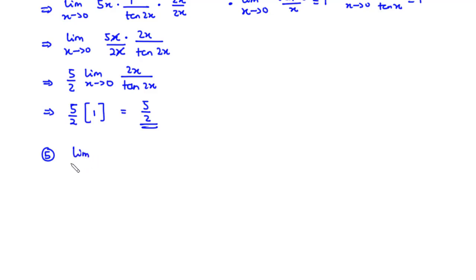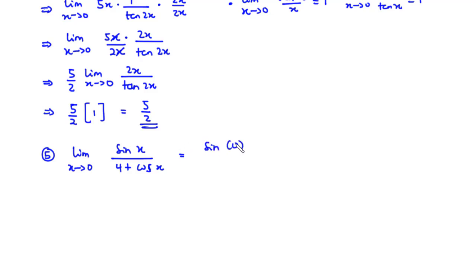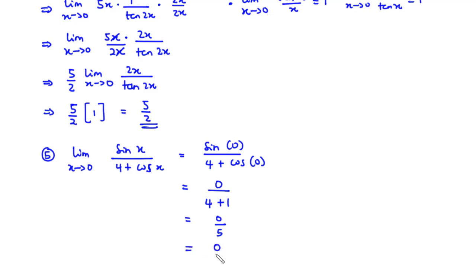For example 5, we solve the limit as x approaches 0 of sin x divided by 4 plus cos x. Here we can use direct substitution by plugging in 0. We get sin 0 divided by 4 plus cos 0, which is 0 divided by 4 plus 1, giving 0 over 5, which equals 0. The limit of this function as x approaches 0 is 0. Remember that direct substitution works for some questions.